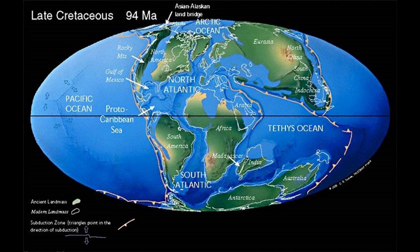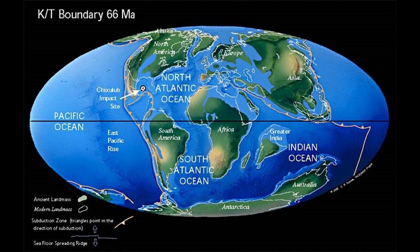Notice that North America was connected to Europe and that Australia was still joined to Antarctica. The bullseye marks the location of the Chicxulub impact site. The impact of a 10-mile-wide comet caused global climate changes that killed the dinosaurs and many other forms of life. By the late Cretaceous, the oceans had widened and India approached the southern margin of Asia.